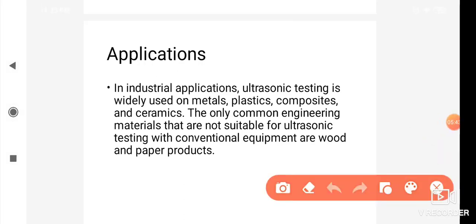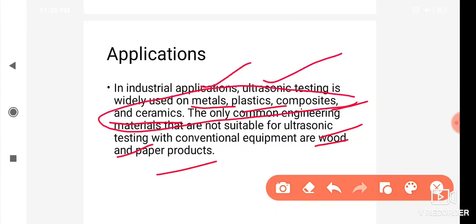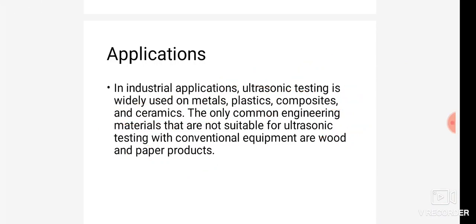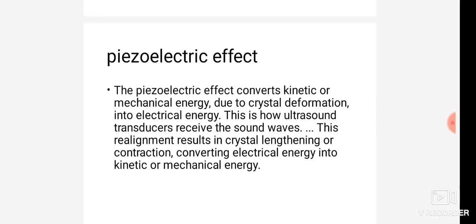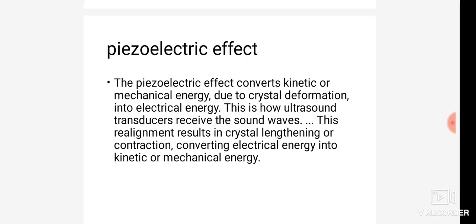In industrial applications, ultrasonic testing is widely used on metals, plastics, composites, and ceramics. The only common engineering materials not suitable for ultrasonic testing with conventional equipment are wood and paper products. This testing process is one important part of the second unit, covering different aspects of ultrasonic testing.